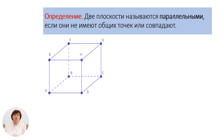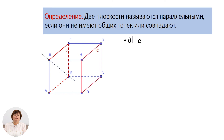На примере кубоида попробуем определить взаимное расположение нескольких плоскостей. Выделим плоскость α и плоскость β – грани, параллельной плоскости α. Плоскости β и α параллельны. Плоскость ЕВА содержит три точки из плоскости β, то есть плоскость ЕВА совпадает с плоскостью β и тем самым тоже является параллельной плоскости α.